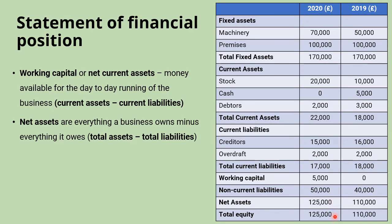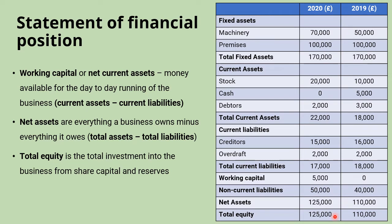Finally, at the bottom, we have the total equity figure, which is the total investment that has gone into the business — essentially, where has the money come from to pay for all of this? It typically comes from the owner's own savings, owner's capital, share capital from the sale of shares, and reserves or retained profit from previous years' trading. Assuming no mistakes, total equity must equal net assets, because the net value of everything owned must have been paid for somehow.